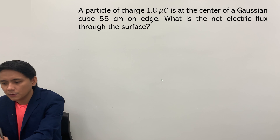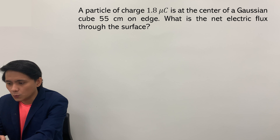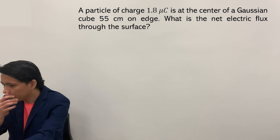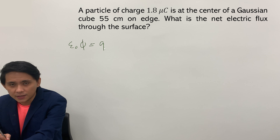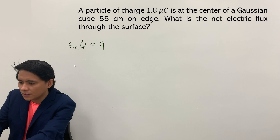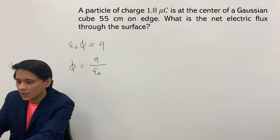For the next example, we have a particle of charge 1.8 microcoulombs at the center of a Gaussian cube, 55 centimeters on each edge. What is the net electric flux through the surface? We will use the formula that relates electric flux to the charge enclosed, and rearranging, the total electric flux is equivalent to Q over epsilon-naught.